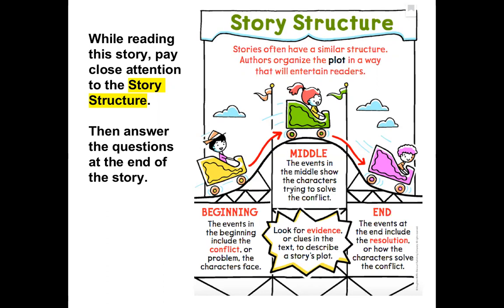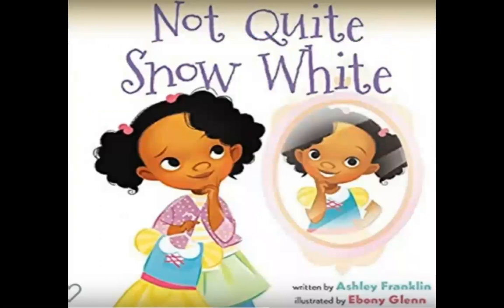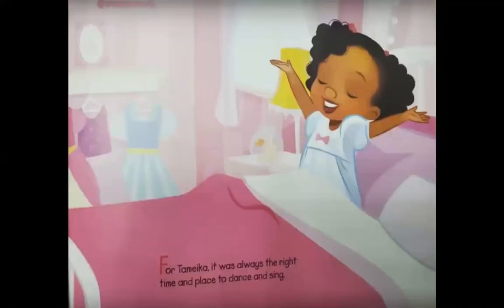At the end of our story there are some questions I'm going to ask you to answer, so you might want to have some paper and a pencil nearby to take notes as we go. 'Not Quite Snow White' is written by an author named Ashley Franklin, and these beautiful illustrations are made by an artist named Ebony Glenn. Let's get right into it. For Tamika, it was always the right time and place to dance and sing.